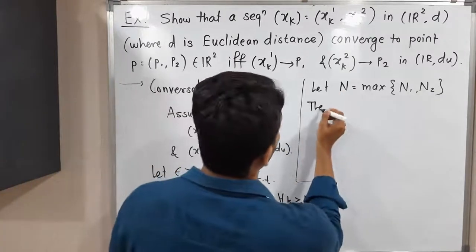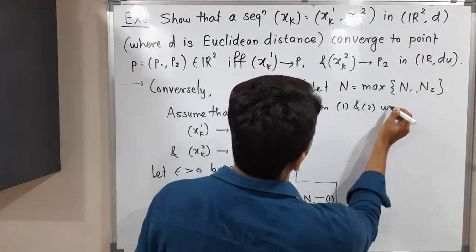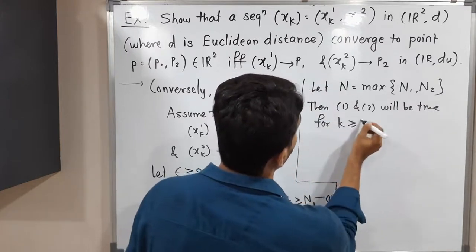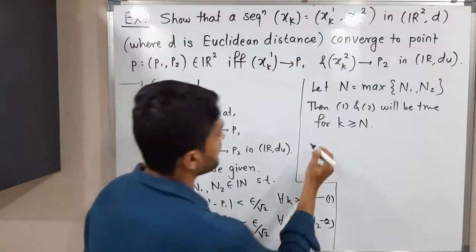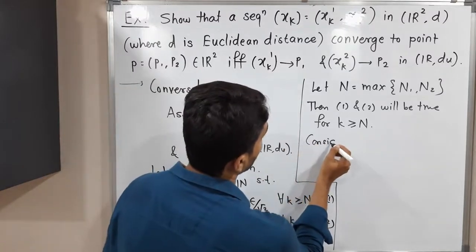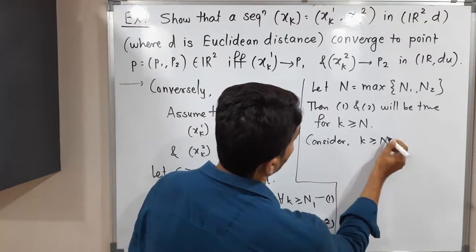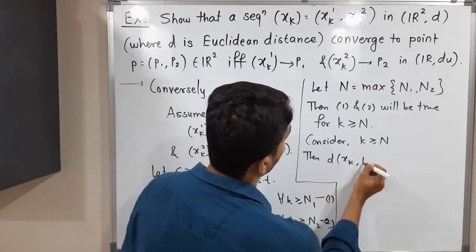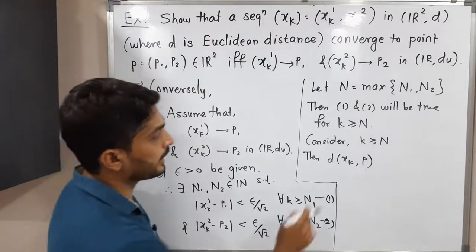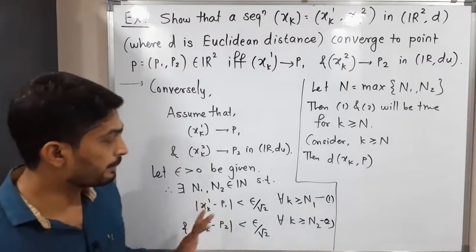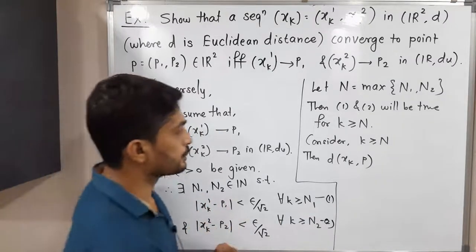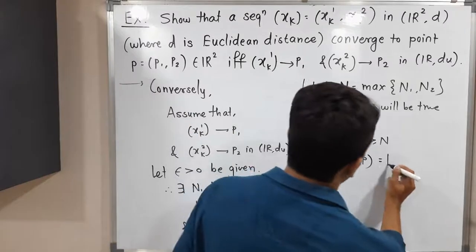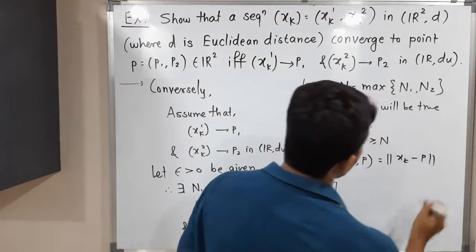Consider k greater than or equal to capital N. Then both inequalities will be true and we can use them simultaneously. We want to find the value of d(xk, p). Since d is the Euclidean metric, we need to write the norm of xk minus p.